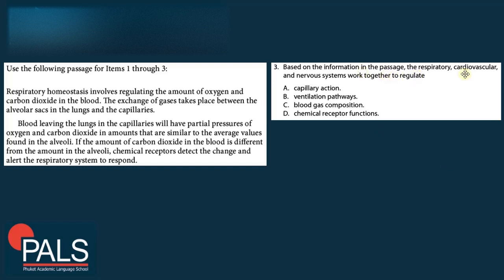Question 3: Based on the passage, the respiratory, cardiovascular, and nervous systems work together to regulate what? This whole text is about regulating oxygen and carbon dioxide in the blood — the gas exchange and maintaining balance. All of these systems work together to regulate the blood gas composition: how much carbon dioxide and how much oxygen is in the blood.